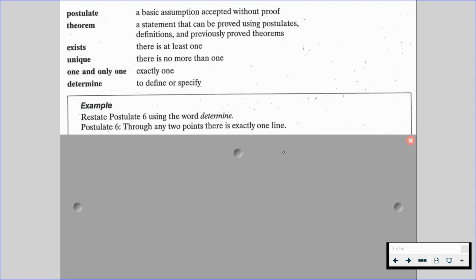So for example, if we have to restate postulate 6 using the word determine, and postulate 6 says through any two points there is exactly one line, we are going to use the phrase determine within this postulate.